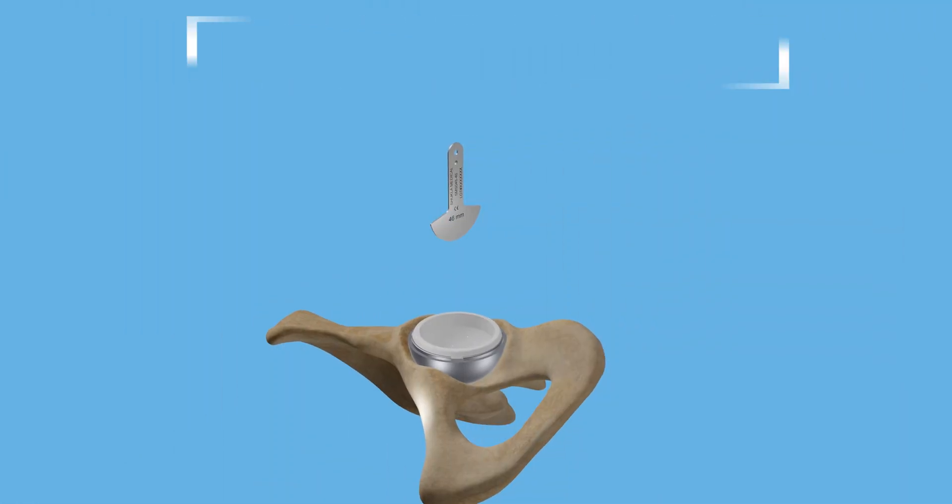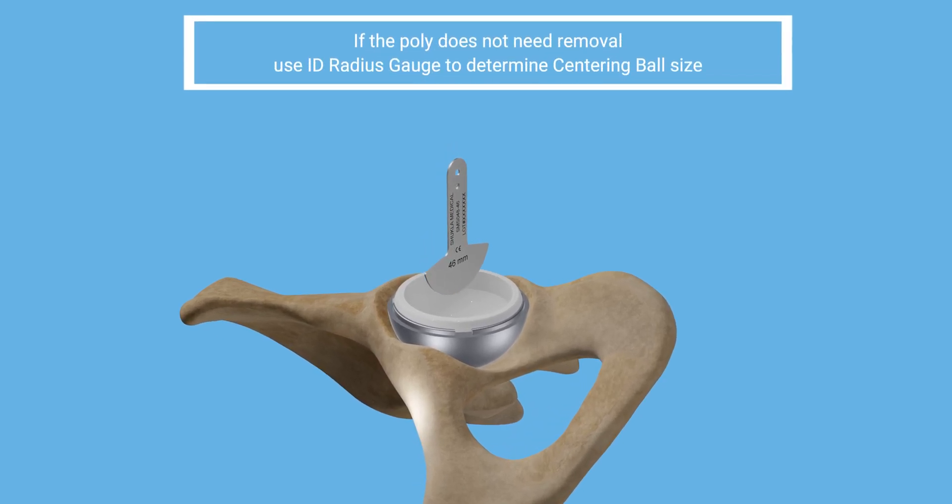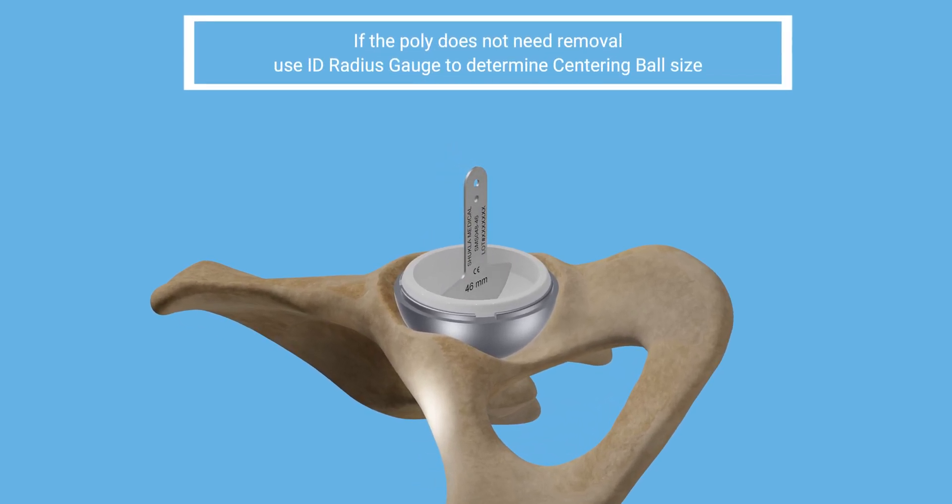To measure the cup liner's inside diameter, start with the ID radii gauges. Select the best fitting gauge and match it with the corresponding centering ball diameter.